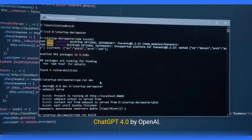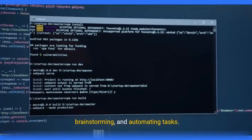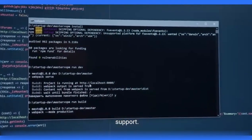AI for content creation. ChatGPT 4.0 by OpenAI. What it does: Advanced AI chatbot for writing, brainstorming, and automating tasks. Use case: Content creation, coding help, business support.